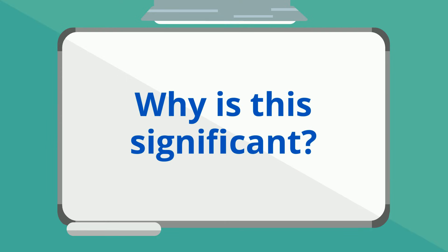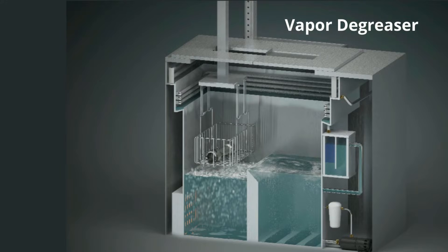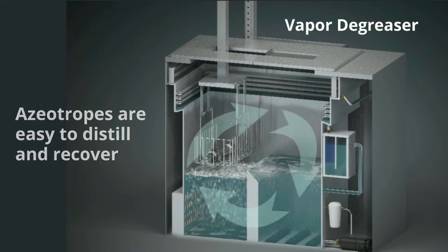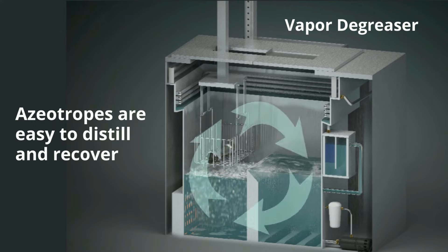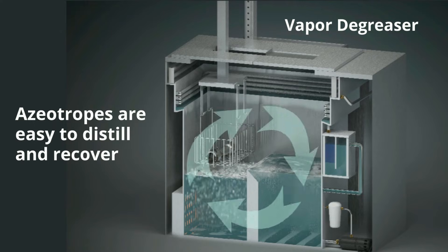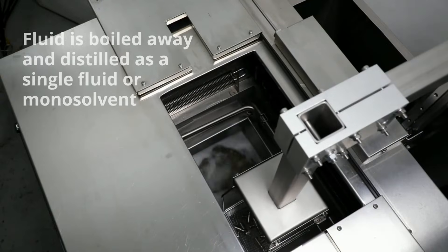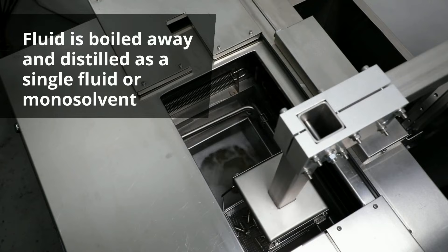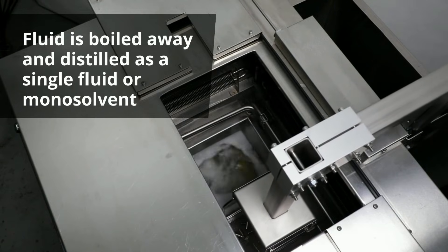Why is this significant? Azeotropes are very easy to distill and recover. If the fluid in a vapor degreaser acts as an azeotrope, then the fluid can be boiled away and distilled as a single fluid or monosolvent.